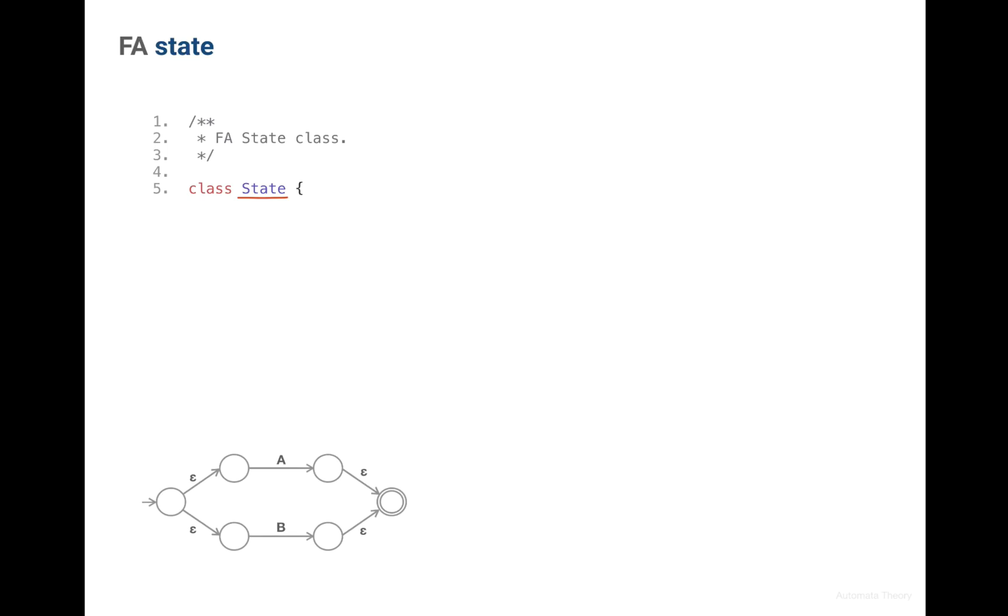Looking at this example state machine, we see that a state can either be accepting or not, so let's accept it as a parameter.